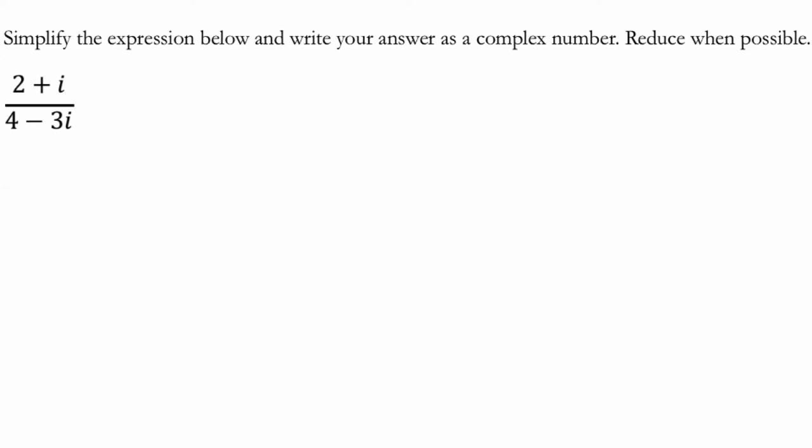let's say that we have A plus BI. This is what a complex number can typically be represented as, where A is the real part and BI is the imaginary part right here. And A and B are real numbers, but I is imaginary.